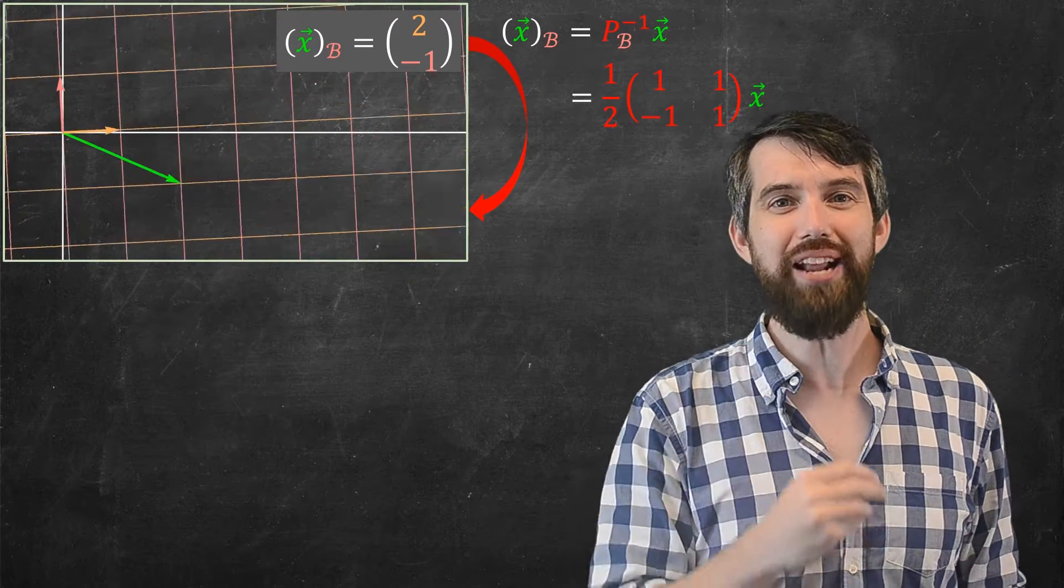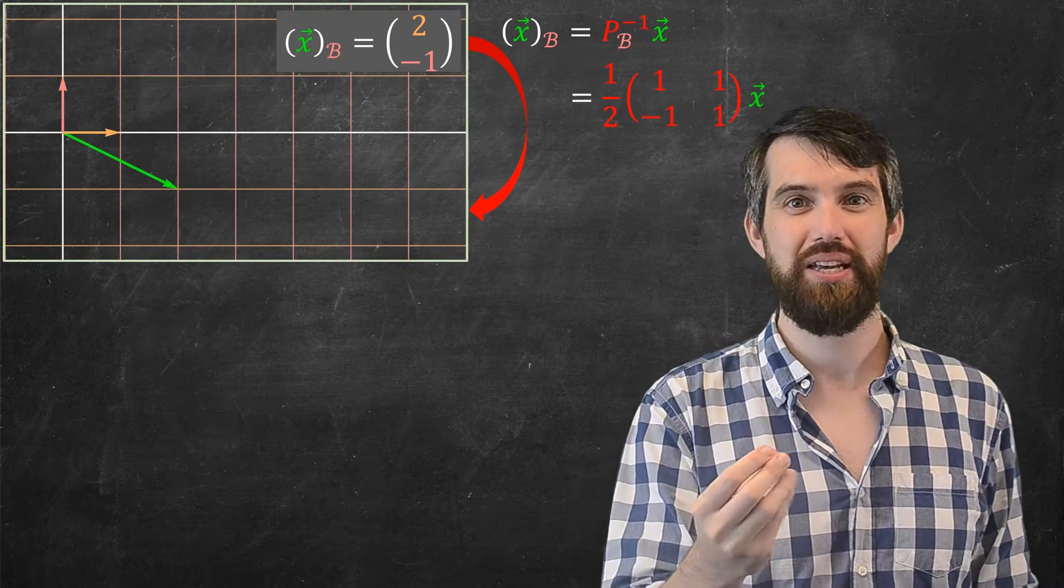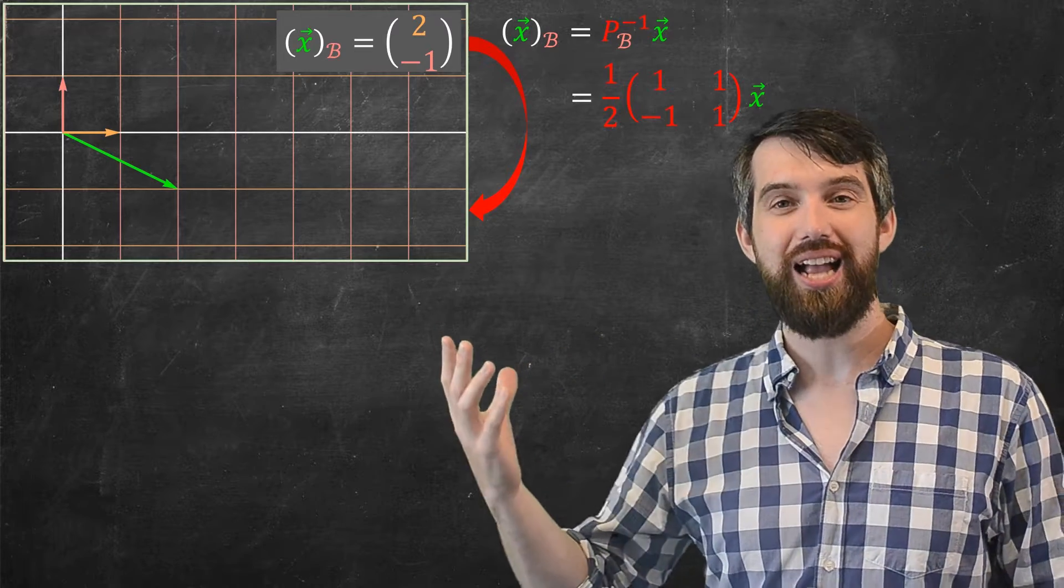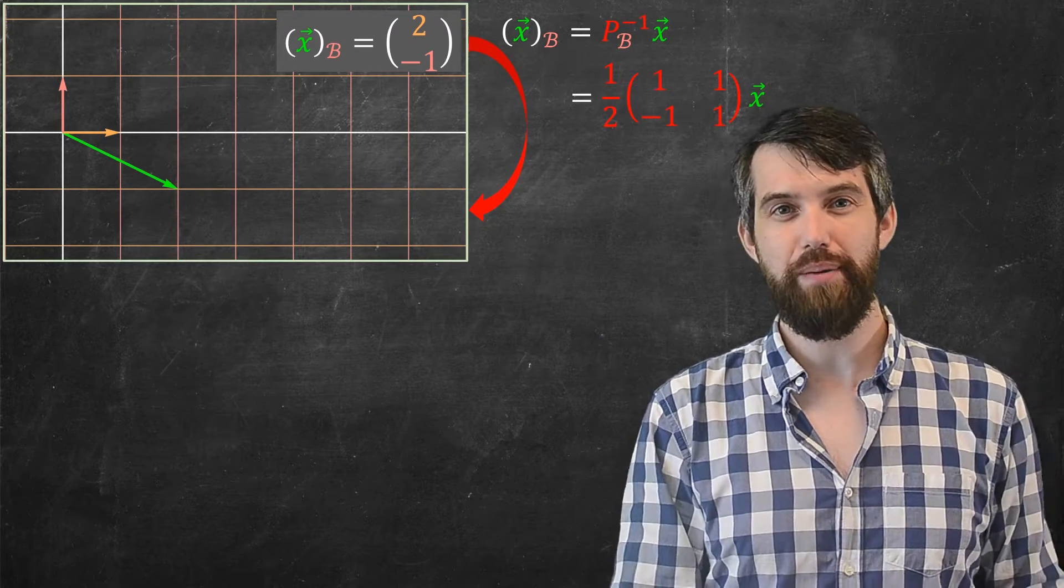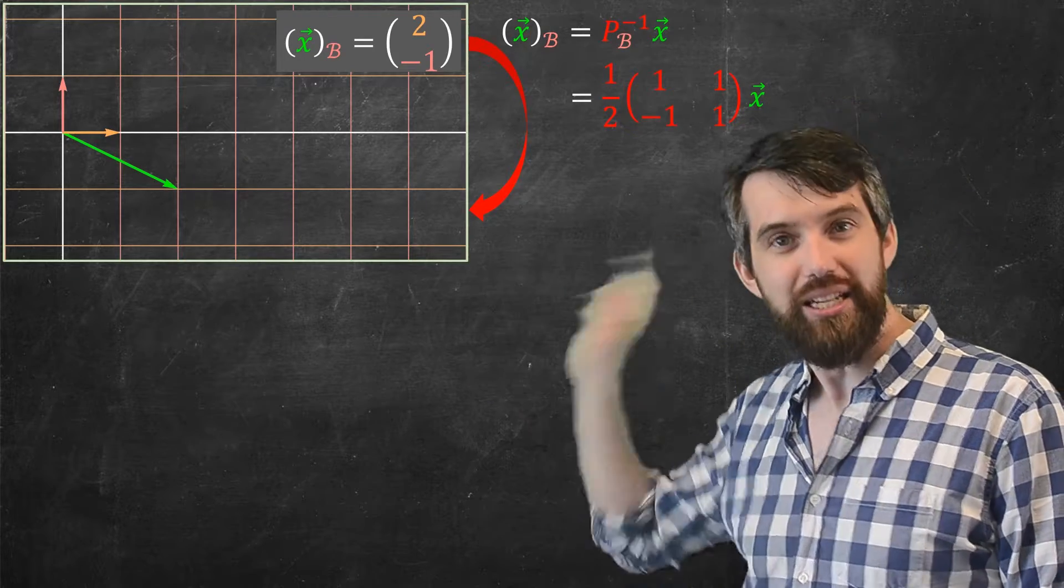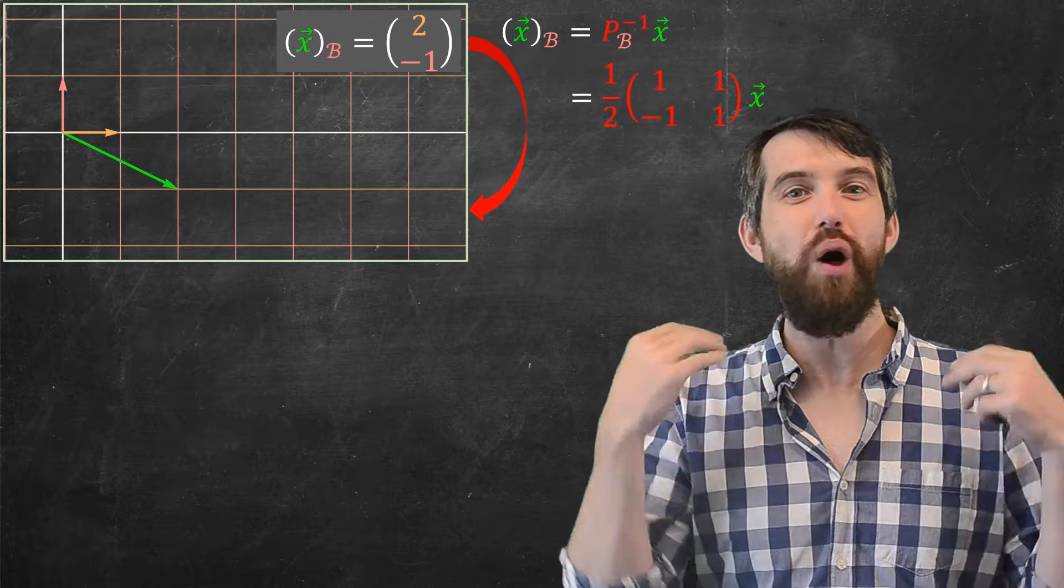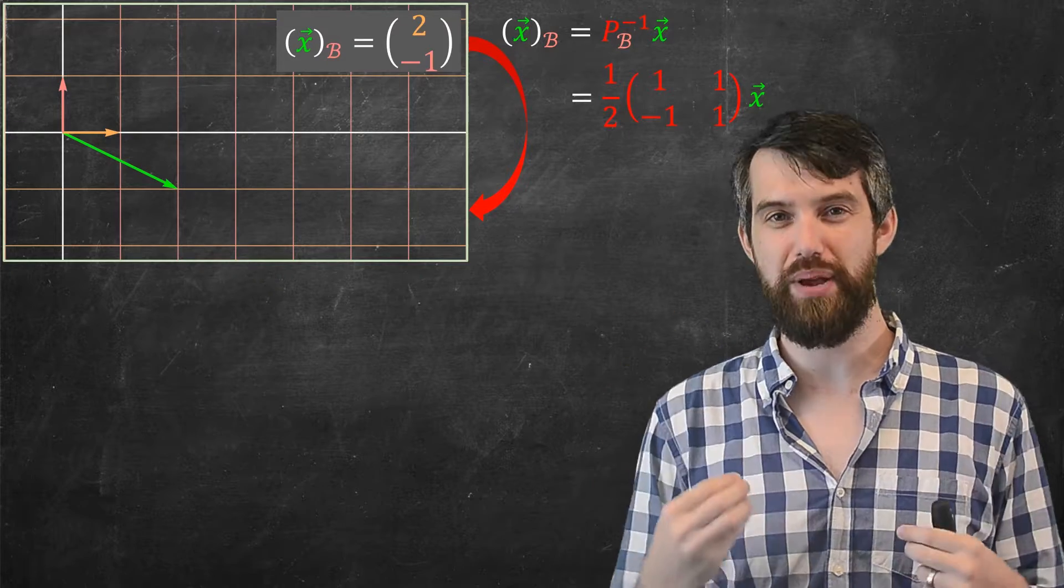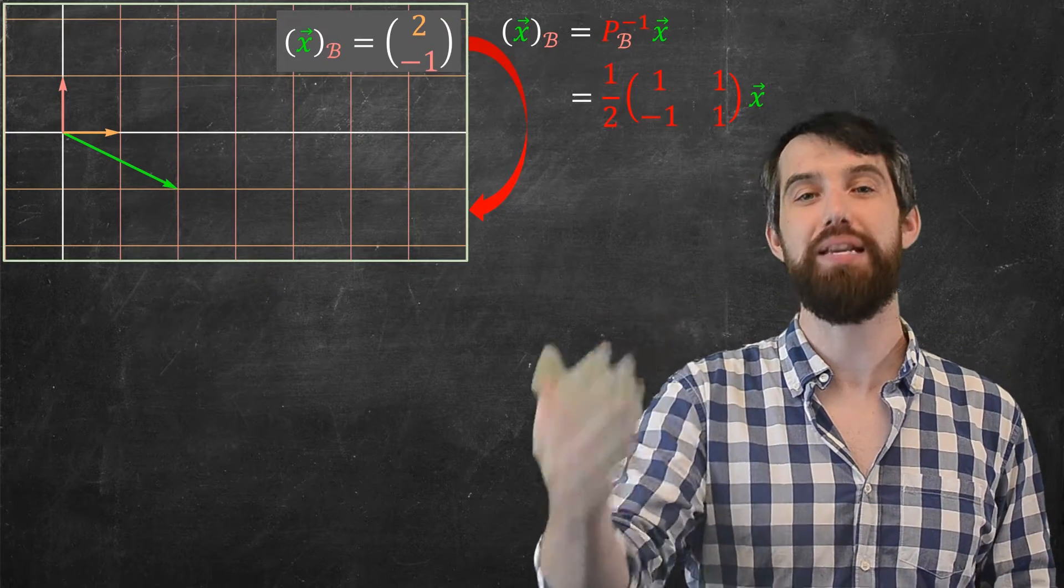So, applying the pb inverse matrix, this just takes everything and kind of stretches it until it looks standard. But here's the key point. This is the b basis still. It is the b basis, but it's now thought of from the perspective of somebody who would be in that b basis.